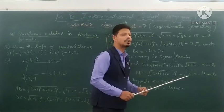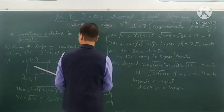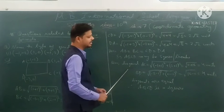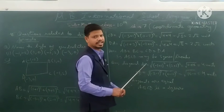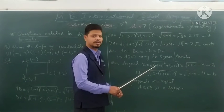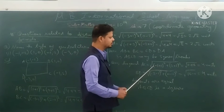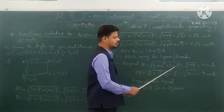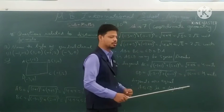We check the diagonals. The two diagonals are AC and BD. To calculate diagonal AC, we use A (−1, −2) and C (−1, 2): √[(−1−(−1))² + (2−(−2))²] = √[0 + 16] = √16 = 4 units.